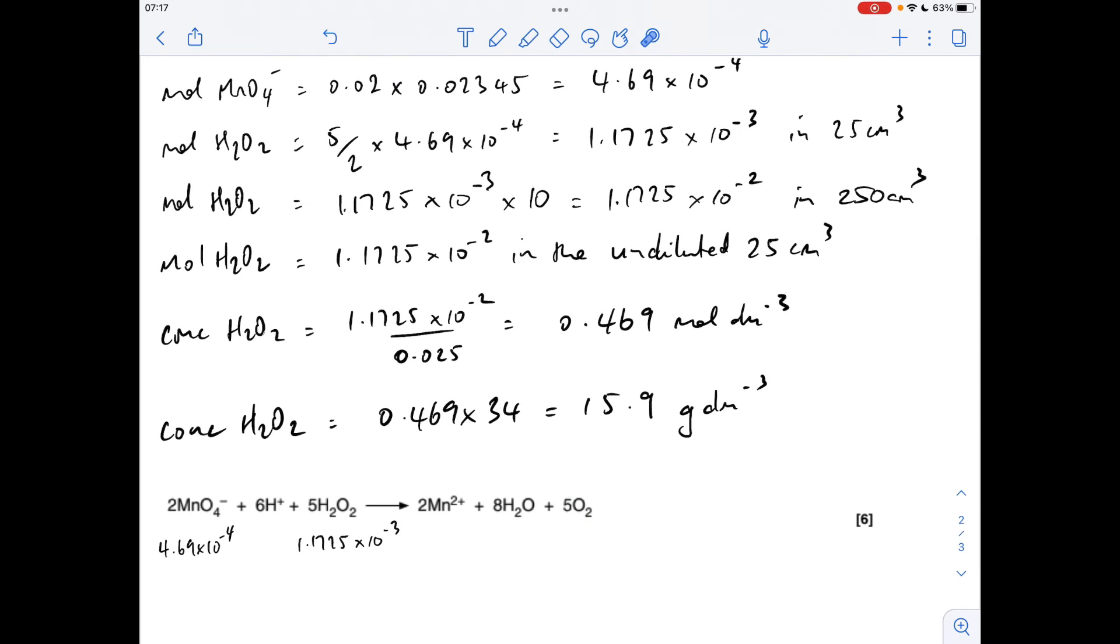So as the equation again, we've already worked out there's that many moles of MnO4 minus ions, there's already that many moles of hydrogen peroxide, so the easiest thing to do is just look at the ratio, 5 to 5. So the moles of oxygen produced will be the same as the moles of the hydrogen peroxide.